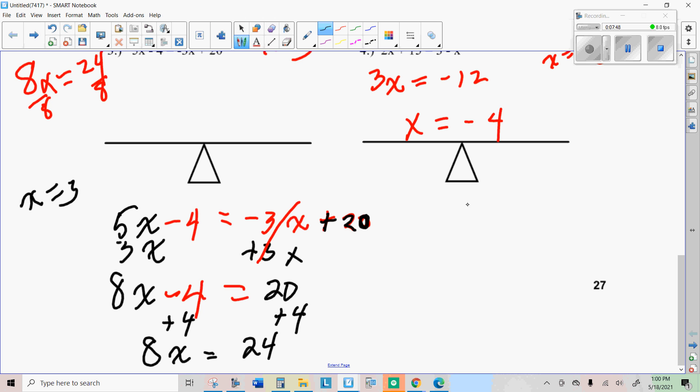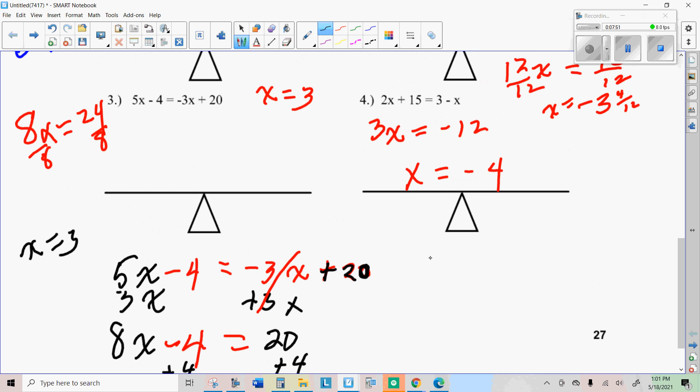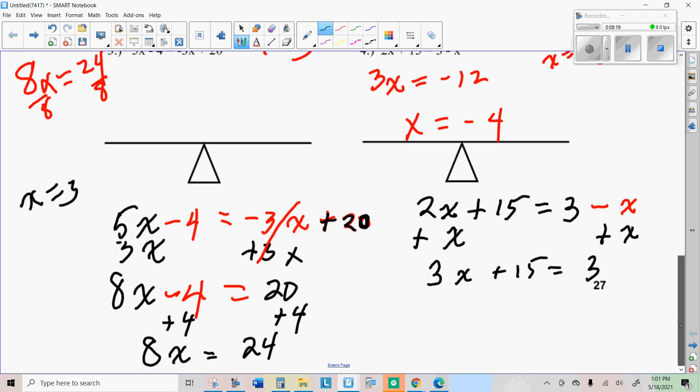We'll do this second one here. I'll show you one more time algebraically. So these are all positives on the left here, the 2x plus 15. And on the right you have positive 3, but then you have negative 1x, so I'll just put a minus x there. Now to get rid of that minus x, I might just add 1x to that. And that gives me 3x plus 15 equals 3. At this point you can backtrack if you want. You could do 3 minus 15, which is negative 12, divided by 3 is negative 4.